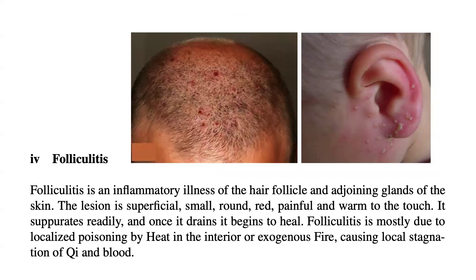Folliculitis: The lesion is superficial, small, round, red, painful, and warm to the touch. It separates rapidly and readily, and once it drains, it begins to heal. Folliculitis is mostly due to localized poisoning by heat in the interior or exogenous fire, causing local stagnation of qi and blood.